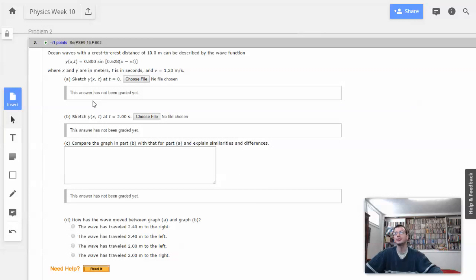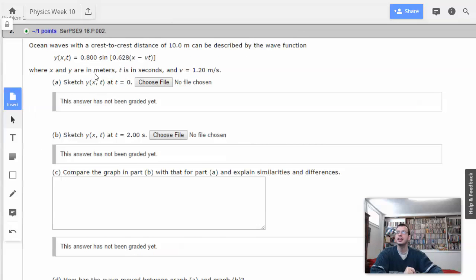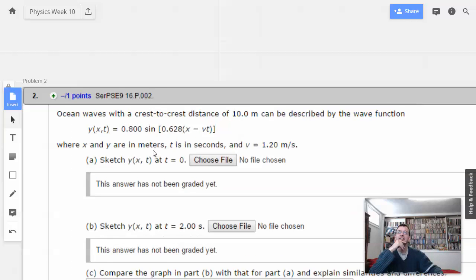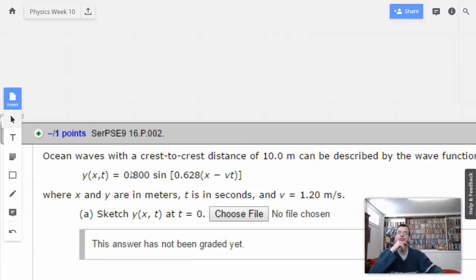Week 10, problem two. Ocean waves with crest-to-crest distance of 10 meters can be described by the wave function. And then they give us a wave function. Where x and y are in meters, t is in seconds, and v is 1.2 meters per second.